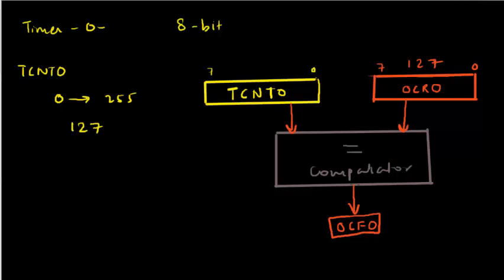So these two values go to a comparator and if they are equal, the OCF0 flag is raised. Similarly, when the timer overflows — it runs from 0 to 255 and rolls over — it raises a flag called the Timer Overflow flag, TOV0 for Timer 0. So when we turn on the timer, TCNT0 keeps incrementing, raises OCF0 on match with OCR0, and raises TOV0 on overflow past 255.